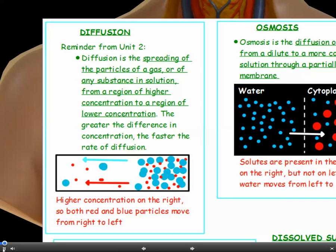Diffusion. If you remember, we covered diffusion in Unit 2. It's the spreading out of particles of a gas or of any substance in solution from a region of higher concentration to a region of lower concentration. The greater the difference in concentration, the faster the rate of diffusion.